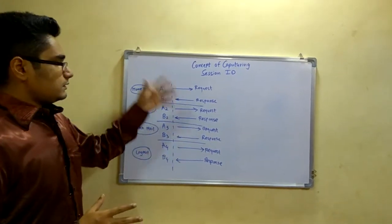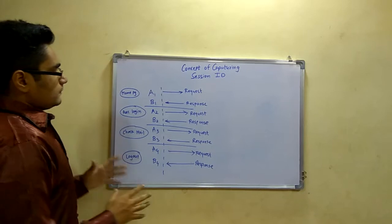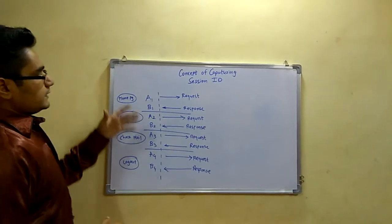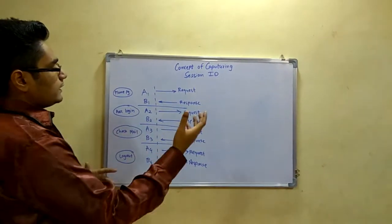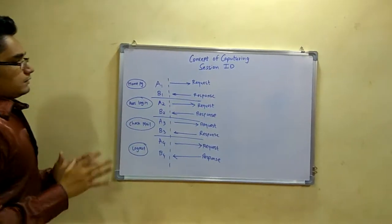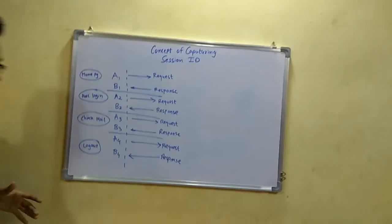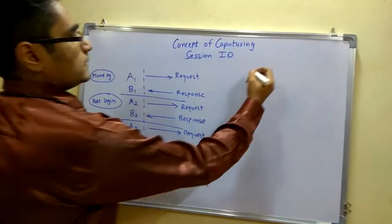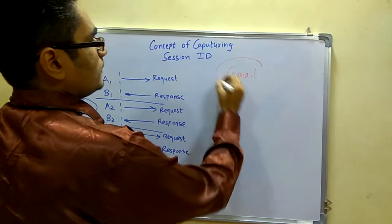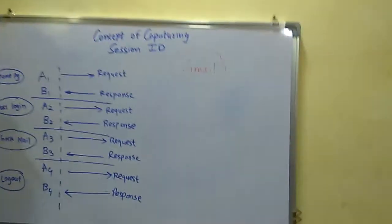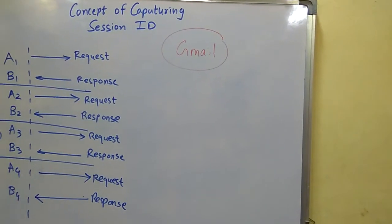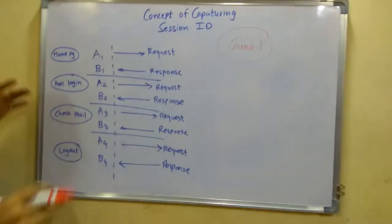So this is actually a concept. In this we are basically giving a request and getting a response for some particular actions. Let us consider the example of Gmail. Now everybody would have used Gmail for accessing mail.